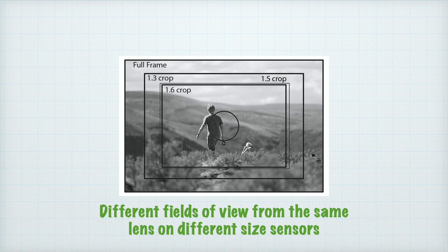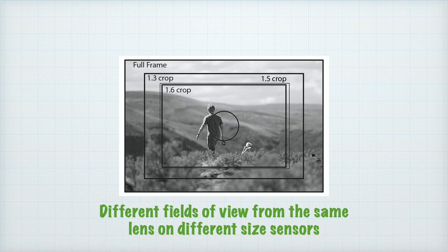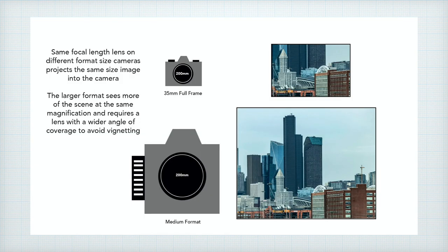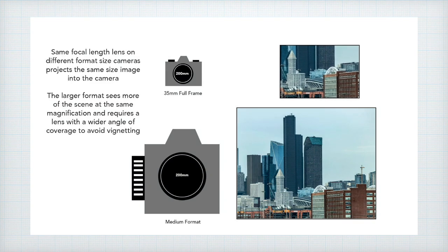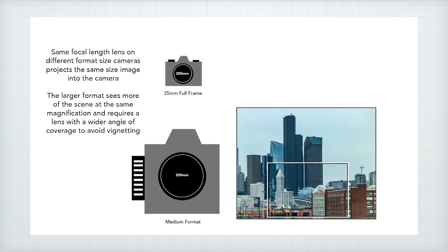What is affected is the field of view. A smaller sensor takes in a narrower field of view at the same focal length. If your camera sensor is half the size of a full frame, we say it has a 2x effect, so a 50mm lens on that camera would have the field of view of a 100mm full frame. Medium format cameras have larger sensors than 35mm, so you get a wider field of view from the same focal length, but from the same camera position the area common to both will be the same size.